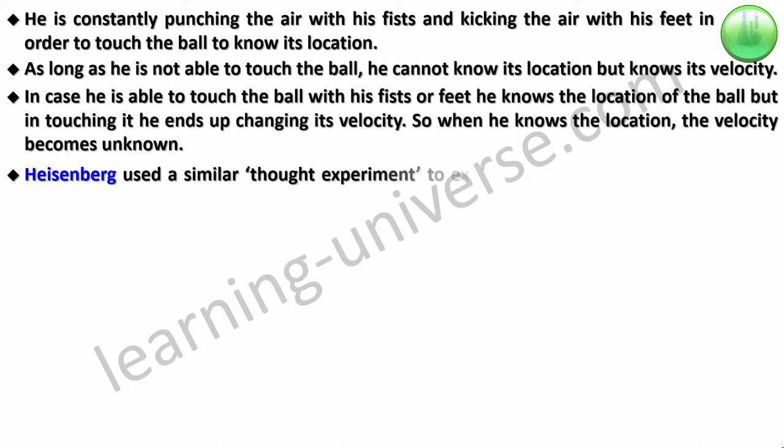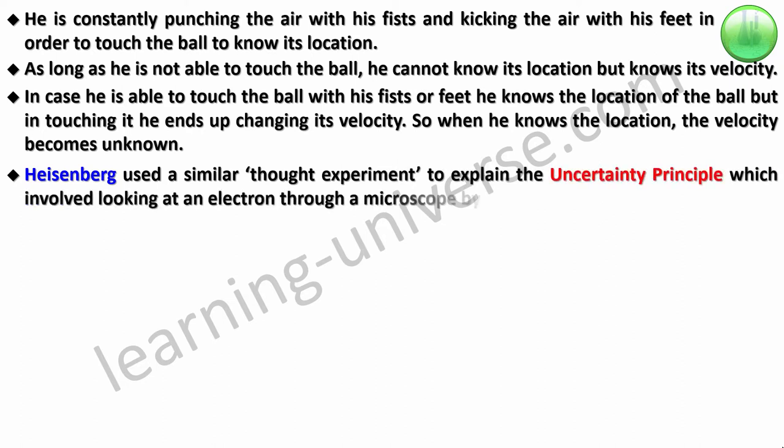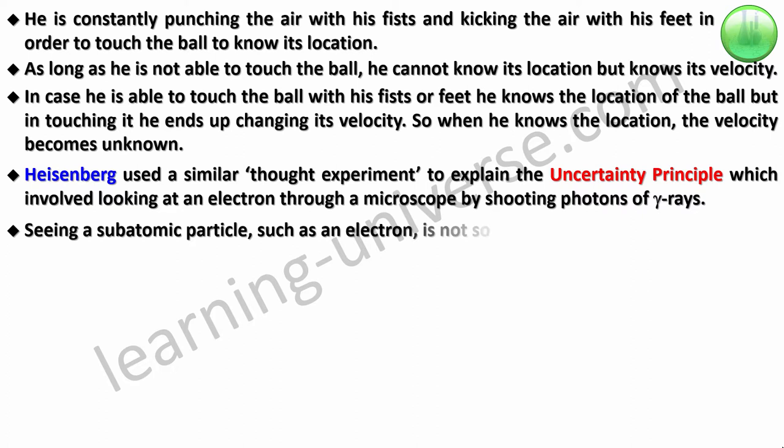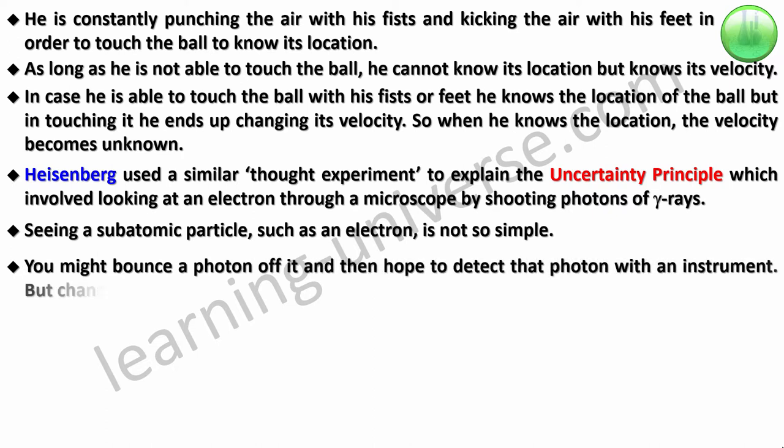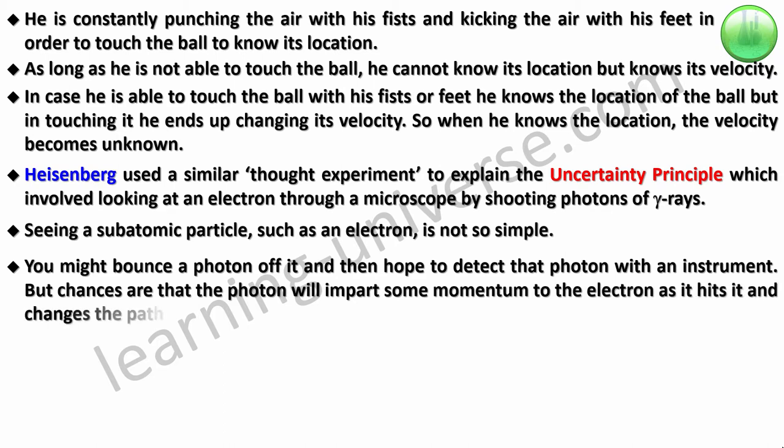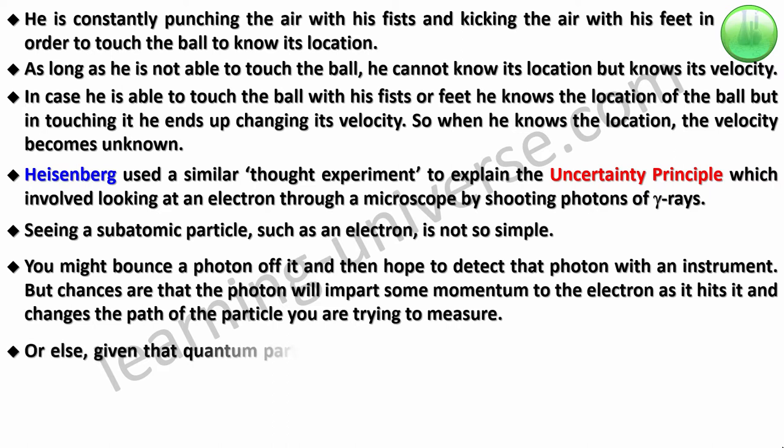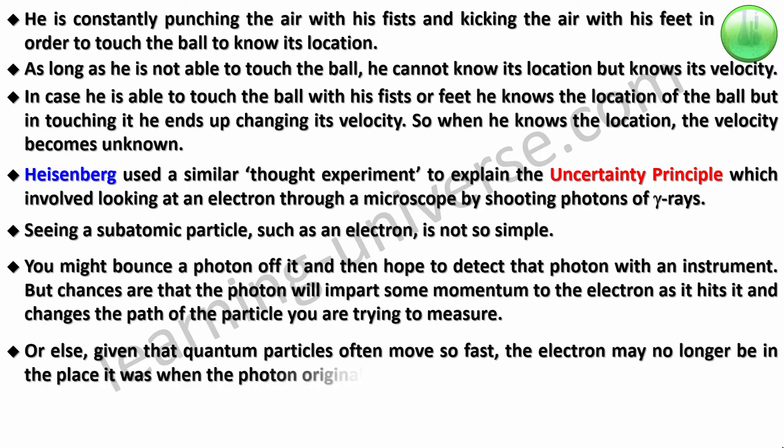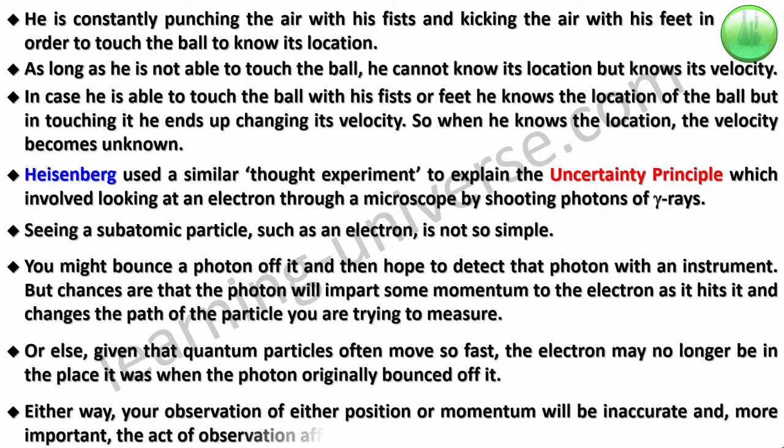Heisenberg used a similar thought experiment involving looking at an electron through a microscope by shooting photons of gamma rays. Seeing a subatomic particle such as an electron is not simple. You might bounce a photon off it and then hope to detect the photon with an instrument, but chances are that the photon will impart some momentum to the electron as it hits it and changes the path of the particle you are trying to measure.